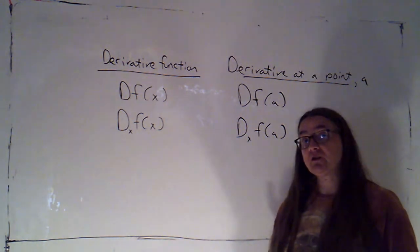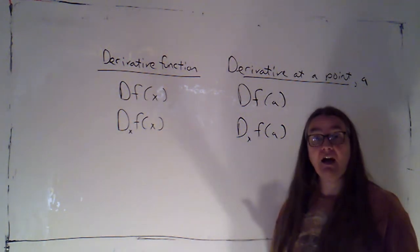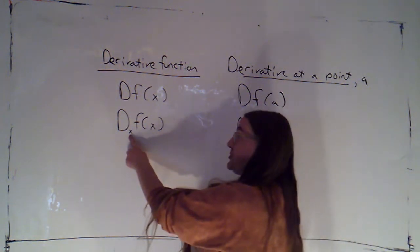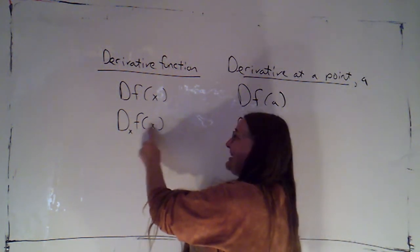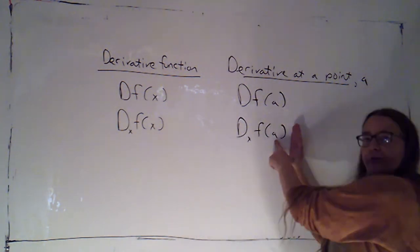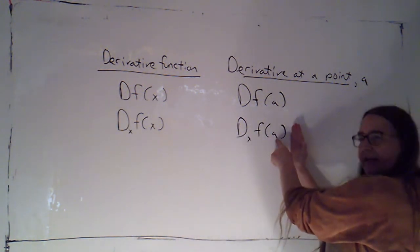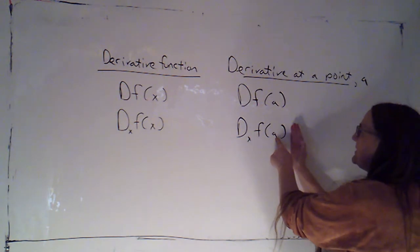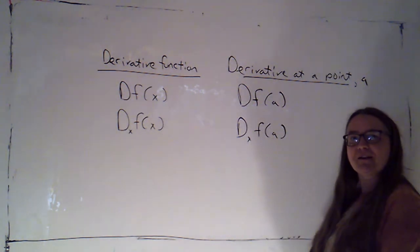Sometimes in applications, we'll be working with functions of time, in which case this subscript would just be a t instead, and then you'd see a t here. And with that notation as well, if you're evaluating at a point, you just plug in the x value of that point into the input parentheses there.